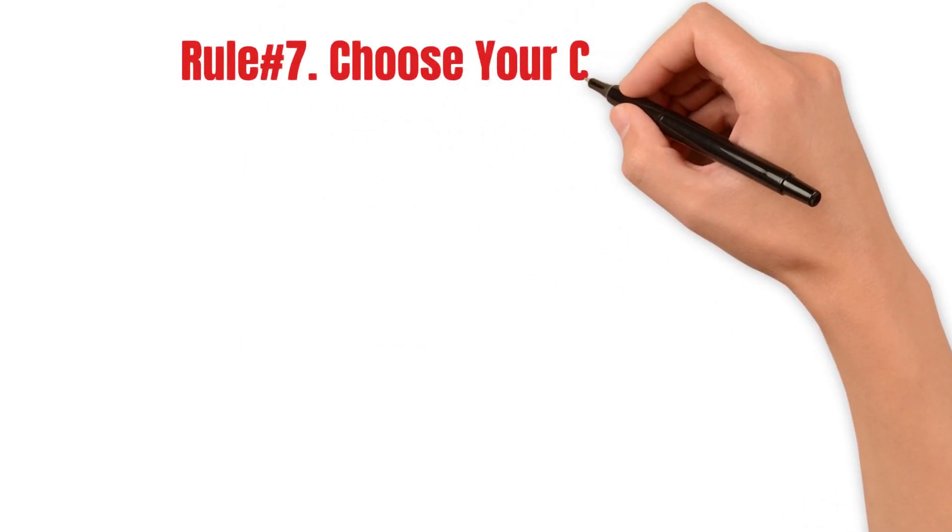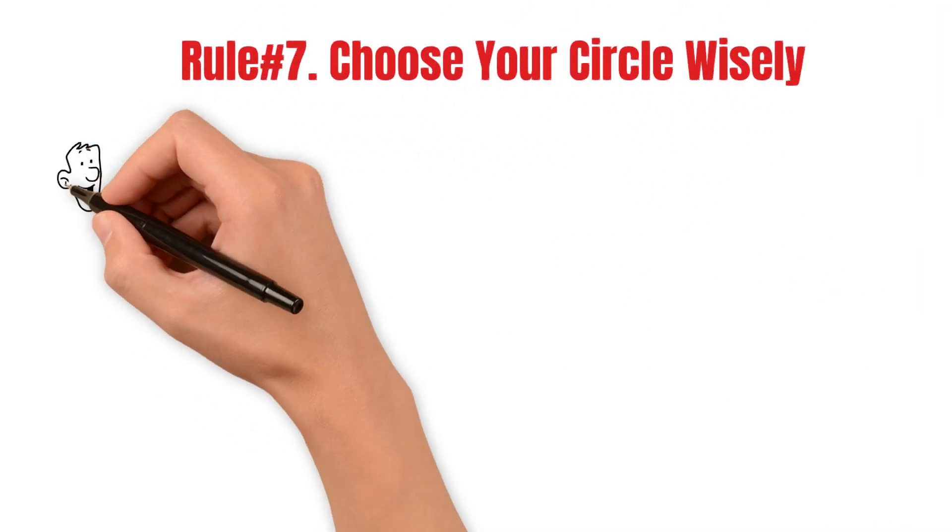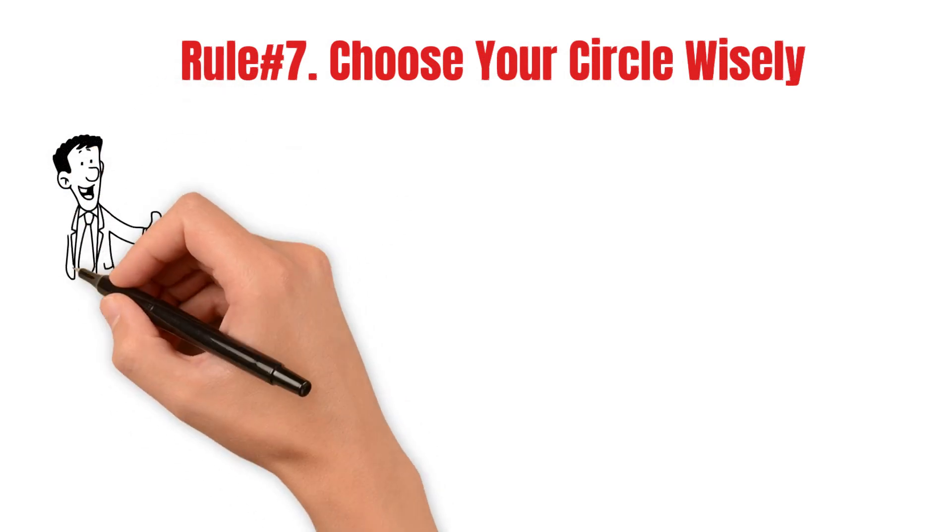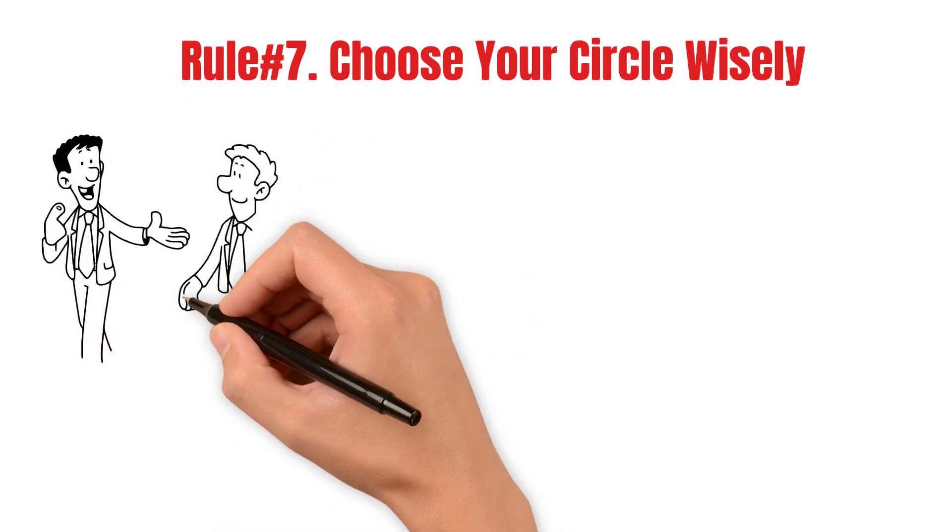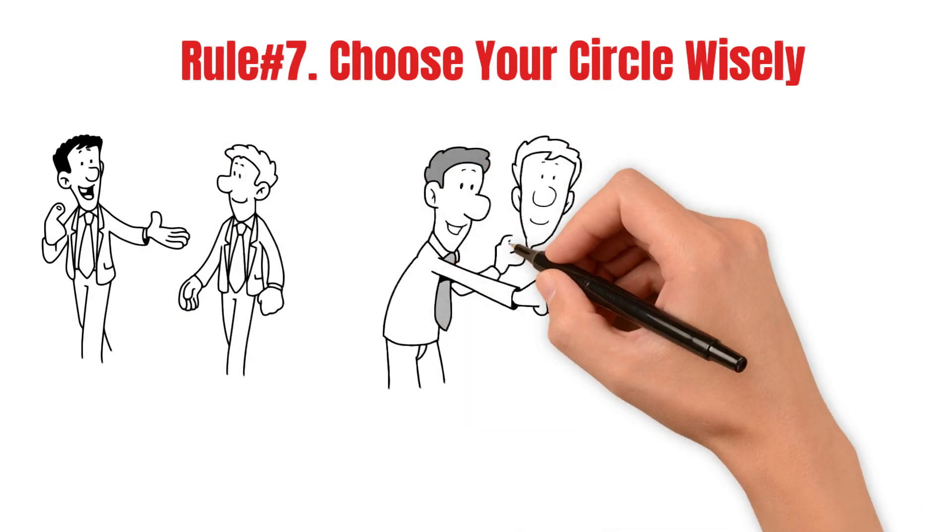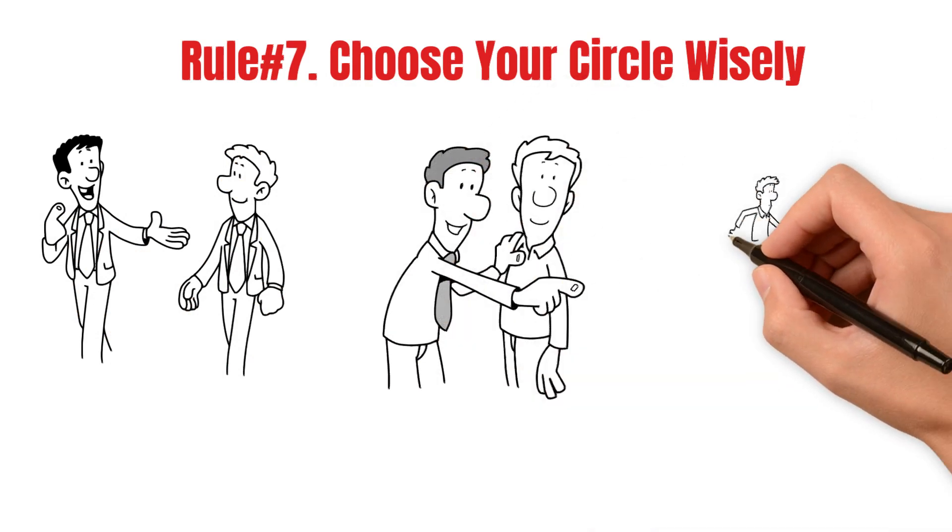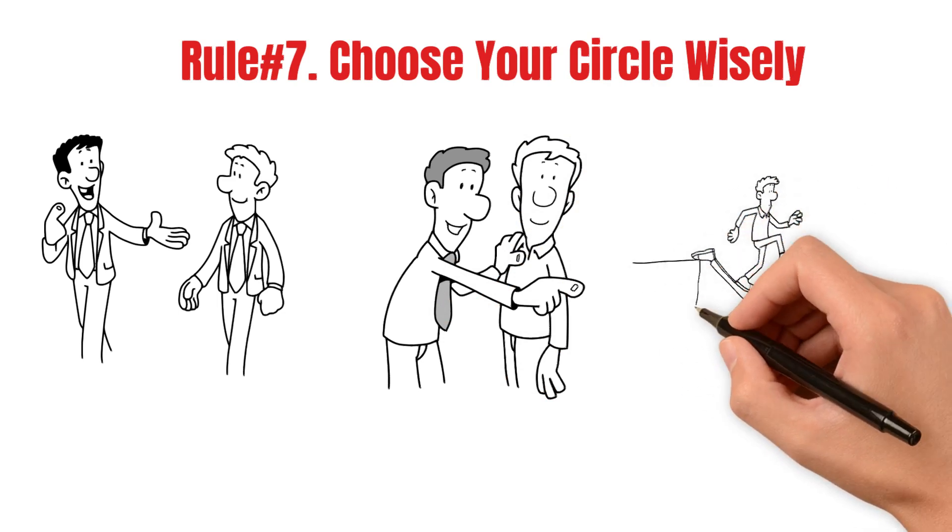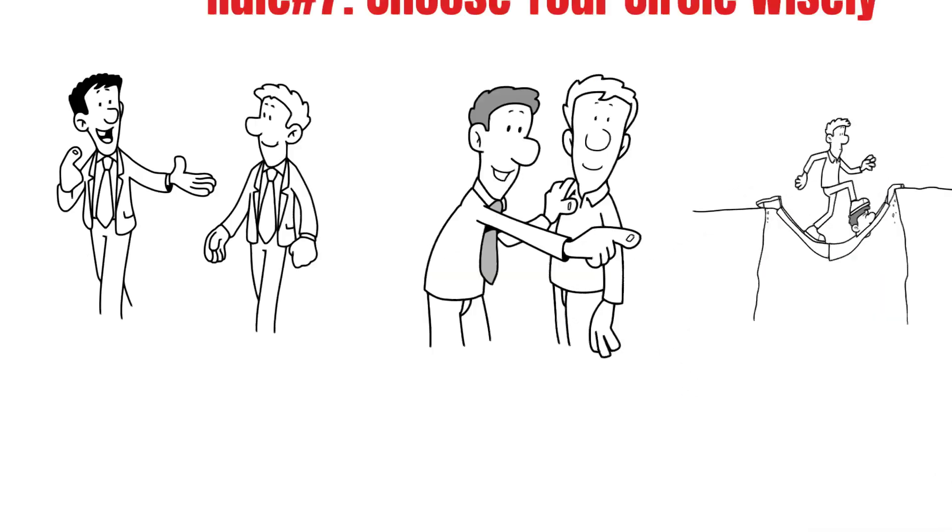Rule number seven: Choose your circle wisely. The people you associate with can significantly impact your earning potential. To make more money, you must surround yourself with individuals with a growth mindset. They can influence you to invest and make more, but most importantly, hold you accountable and push you to your limits.